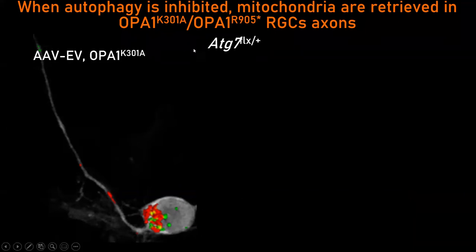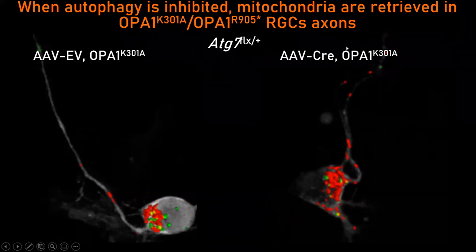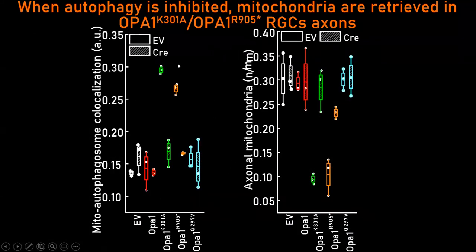In ATG7 monoallelic-deleted cells expressing a pathogenic OPA1 mutant, you see very few mitochondria in the axon and a lot of autophagosomes and mitochondria congregated at the axon hillock. When we actually ablate one allele using CRE, you see that you restore the distribution of mitochondria and restore the entry of mitochondria into the axon. If you measure all parameters of mitochondria-autophagosome co-localization and axonal mitochondria density in micrometres, you can clearly see that when you delete autophagy, you completely restore the equalization of mitochondria.